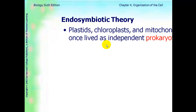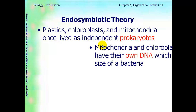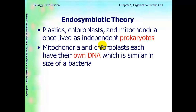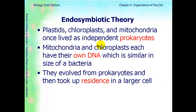The endosymbiotic theory states that plastids, chloroplasts, and mitochondria all used to live as independent prokaryotes or bacteria cells. The reasoning behind this theory is that mitochondria and chloroplasts each have their own DNA, which is similar in size to bacteria. They believe these organelles evolved from prokaryotes and then took residence in a larger cell that may have eaten the bacteria. This is still being argued about today, and some scientists don't believe it.